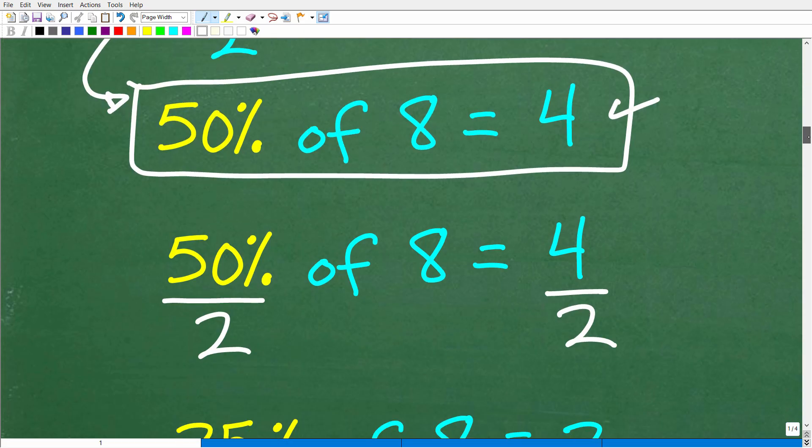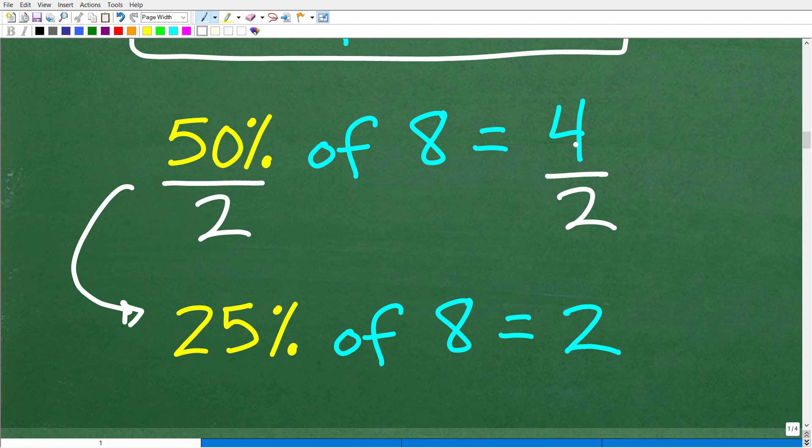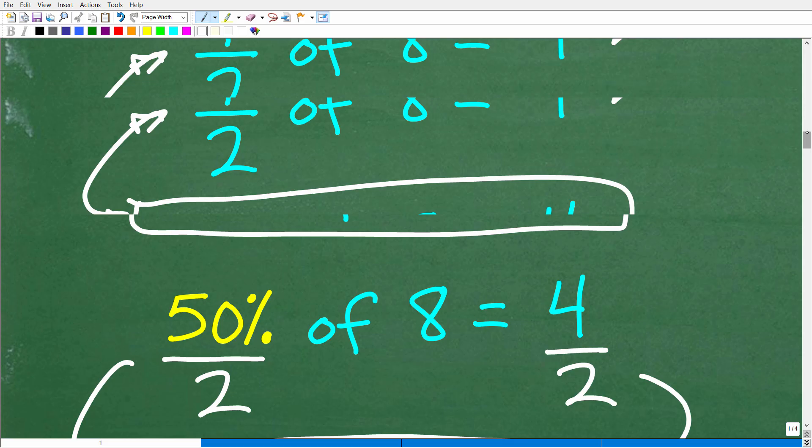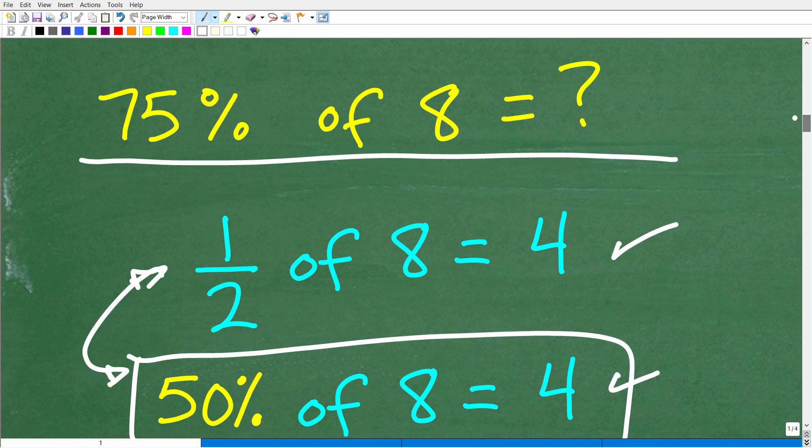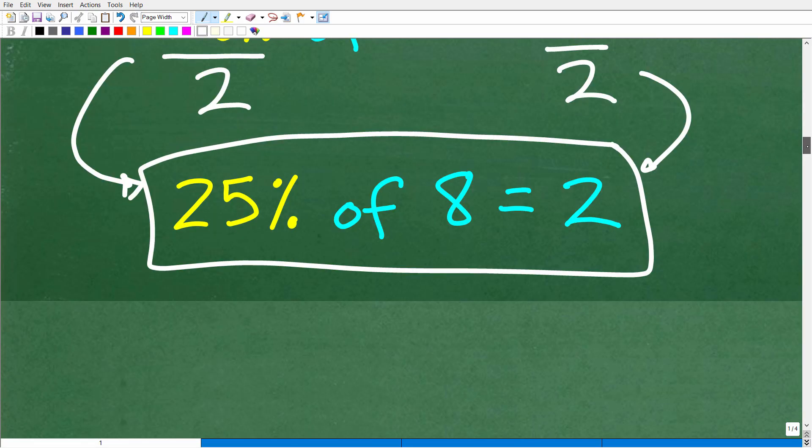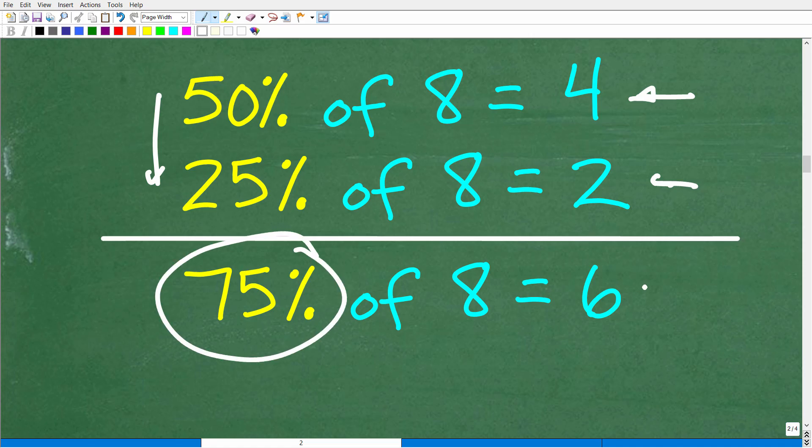Now, where am I going with this? Well, let's take that 50% and divide it by 2. So if 50% of 8 is 4, then if I take that 50% and divide it by 2, I have 25%. So 25% of 8 is 2. You can break down percentages in your brain like this. So 50% of 8 is 4, 25% of 8 is 2. If I add these together, 75% of 8 is 4 plus 2, which is 6.